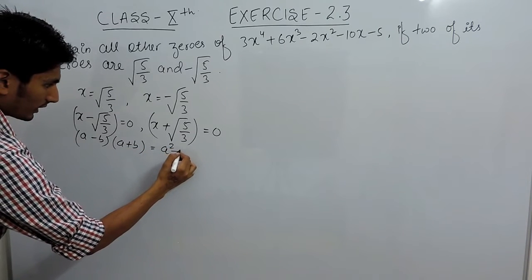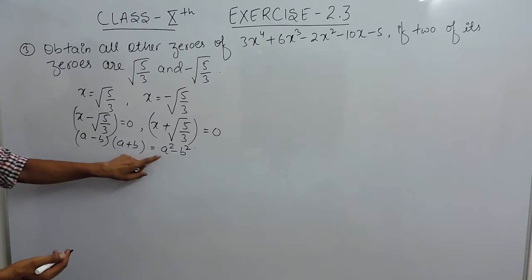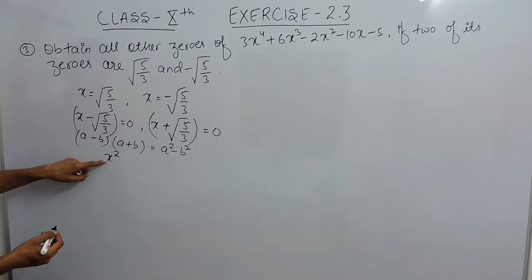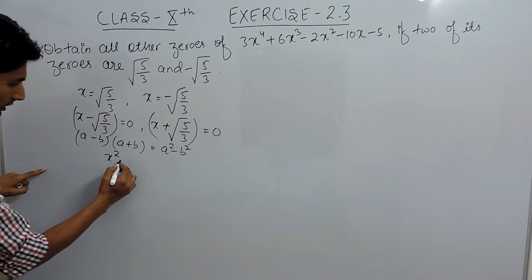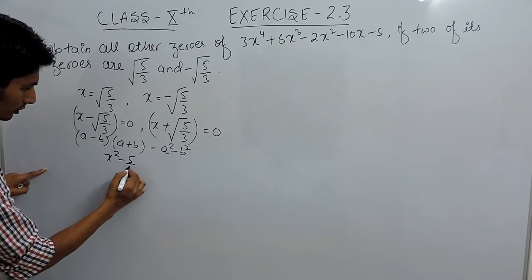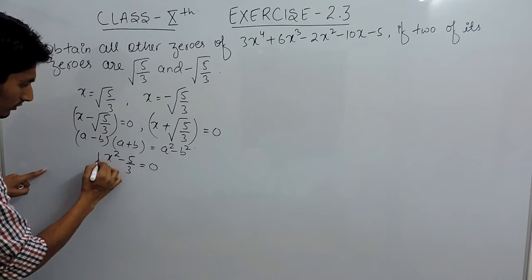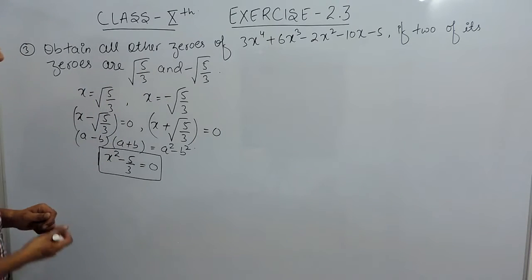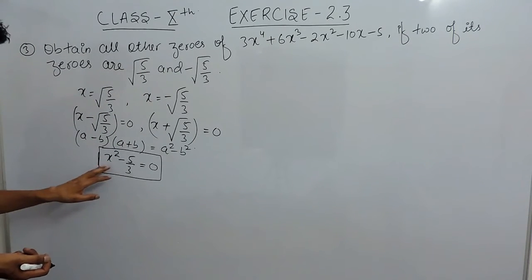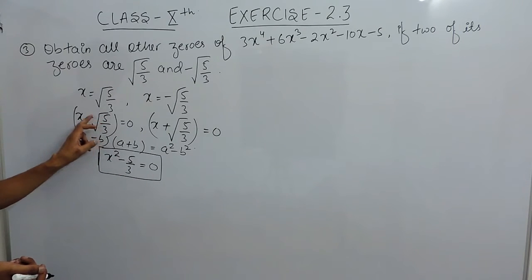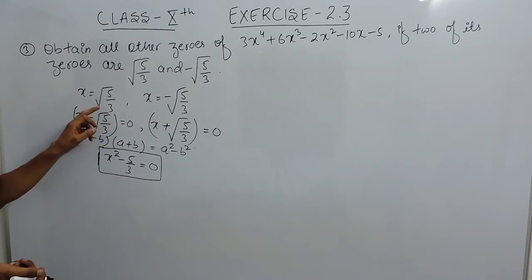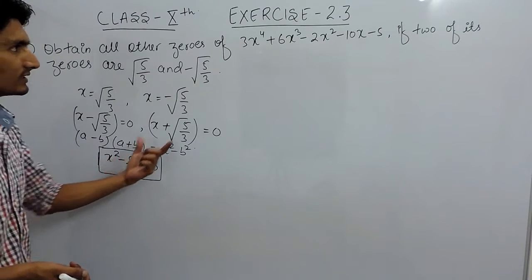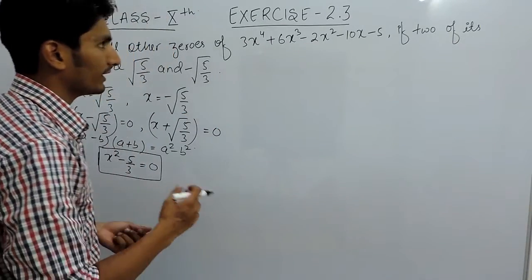Multiplying these two factors: this is basically (a - b)(a + b) which equals a² - b². Here a is x, so we get x², and b is √(5/3), so b² is 5/3. Therefore (x² - 5/3) equals 0, and this must be a factor for this particular polynomial.